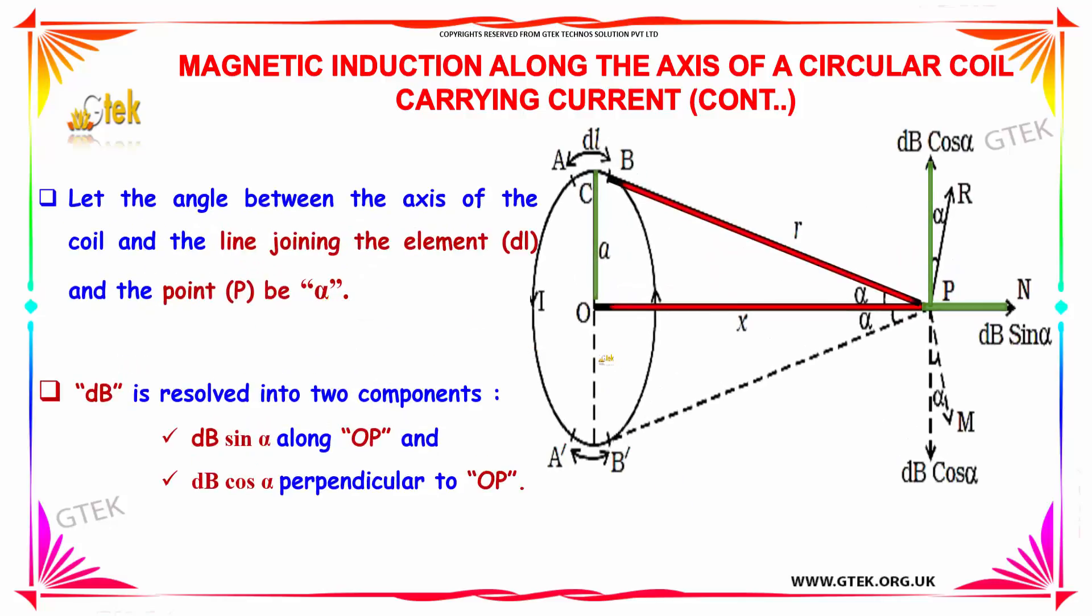Let the angle between the axis of the coil and the line joining the element dl and the point P be alpha. The dB or magnetic induction is resolved into two components: dB sin alpha which is along OP and dB cos alpha which is perpendicular to OP.